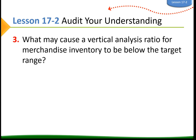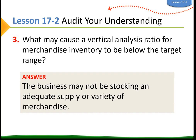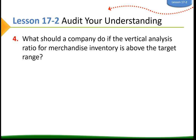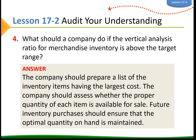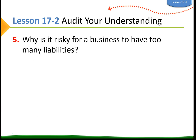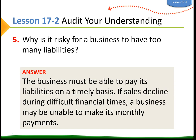What may cause a vertical analysis ratio for merchandise inventory to be below the target range? The business may not be stocking an adequate supply or variety of merchandise. What should a company do if the ratio for merchandise inventory is above the target range? The company should prepare a list of inventory items having the largest cost, assess whether the proper quantity of each item is available for sale, and ensure that future inventory purchases maintain the optimal quantity on hand. Why is it risky for a business to have too much liabilities? The business must be able to pay its liabilities on a timely basis. If sales decline during difficult financial times, a business may be unable to make its monthly payments.